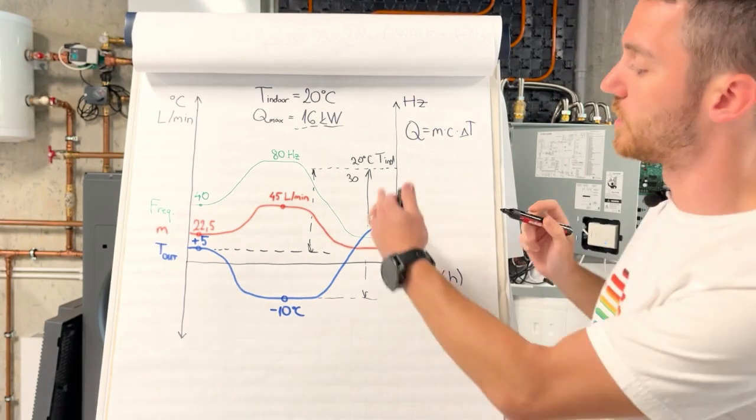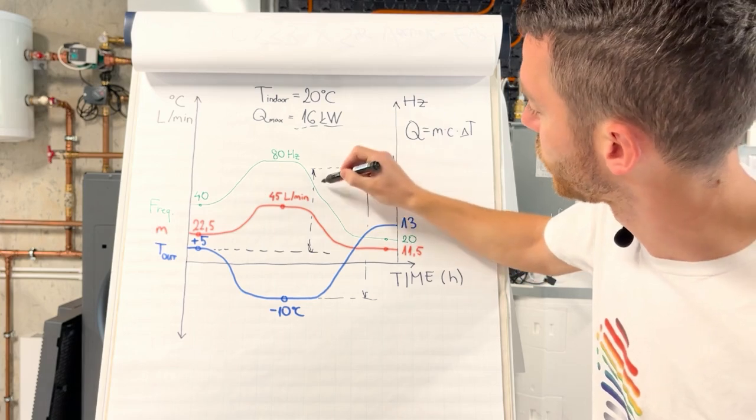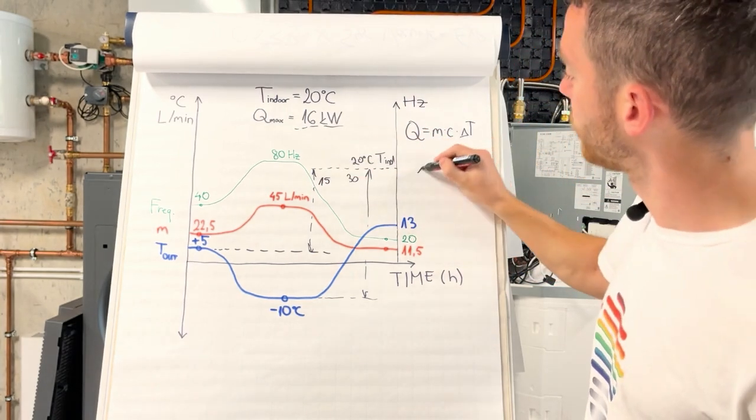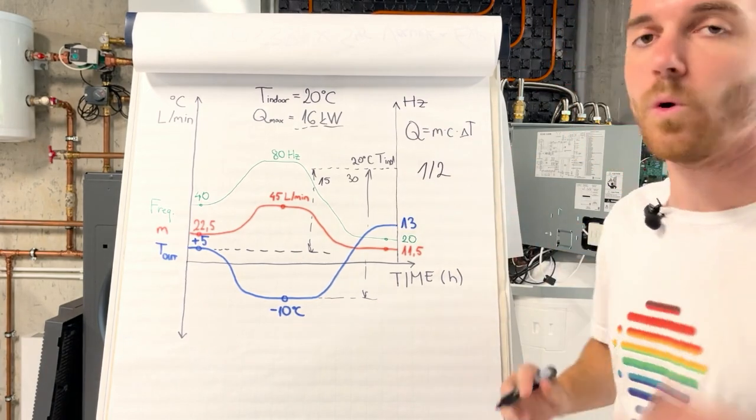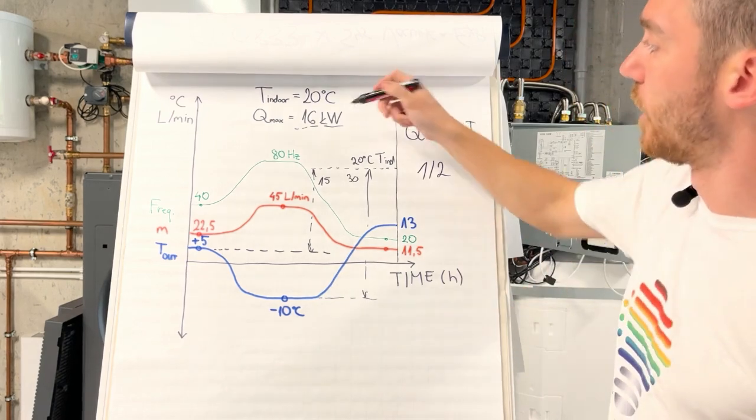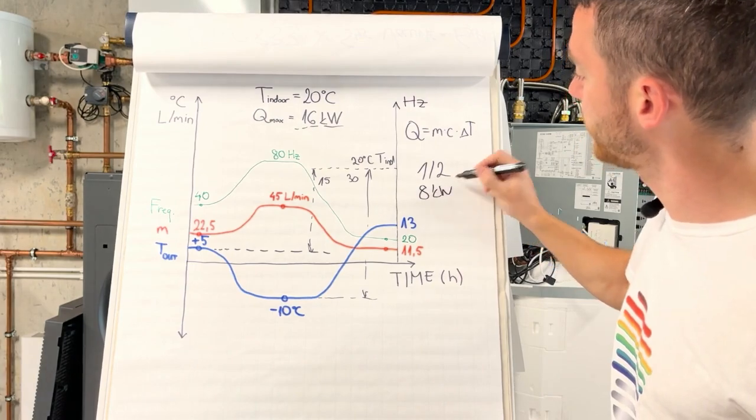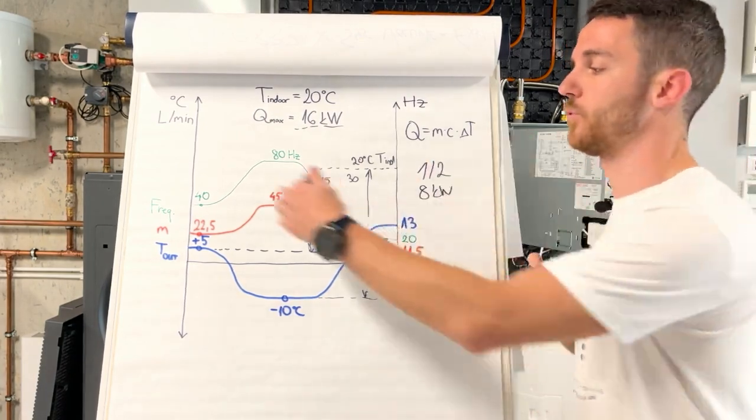But when we are on five degrees, our delta T is not 30, our delta T is 15. So here is 15, and this is half. Half delta T means half heating capacity needed, so eight kilowatt, and this means half flow rate.